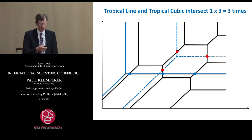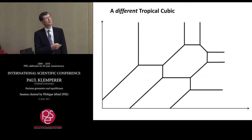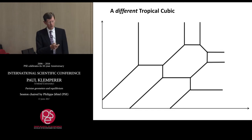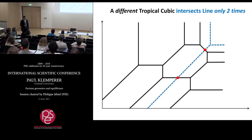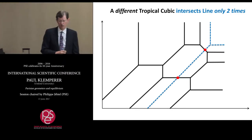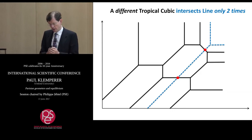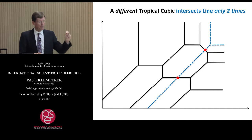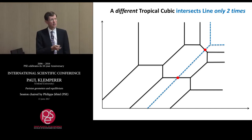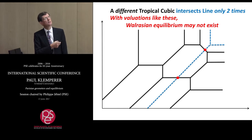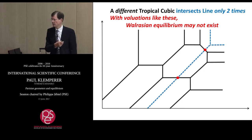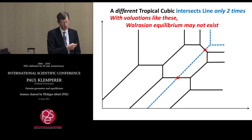Now here is a different tropical cubic and the same line — and it only intersects exactly twice. What has gone wrong is a tangency. And in fact, a situation like that with a tangency will correspond precisely to competitive equilibrium not existing — a failure of intersection.